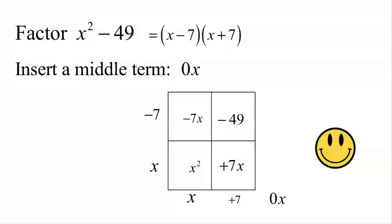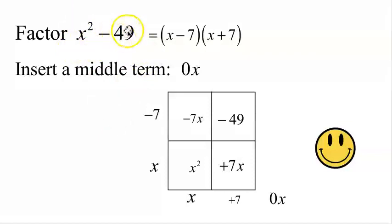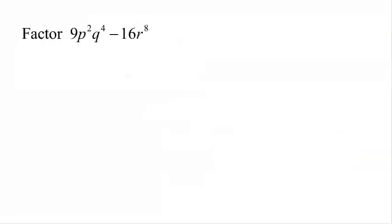What we have here is an example of a difference of two perfect squares. x squared is something squared, namely x. 49 is something squared, namely 7. So we have x squared minus 7 squared — a subtraction of two perfect squares. That's our strategy, and our next example is also a difference of two perfect squares.